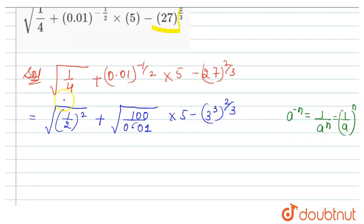Now square and square root cancelled. So it is 1 by 2 plus 100 is a square of 10. So square and square root cancelled. So we get 10 into 5 minus here 3 divided by 3 cancelled. So 3 square is 9.